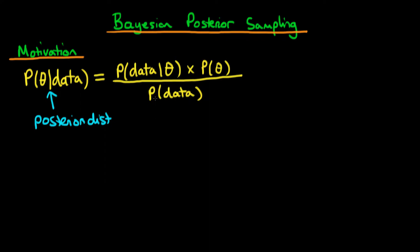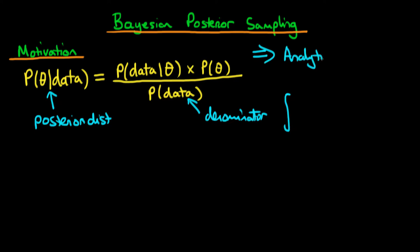We've spoken about the difficulty behind this, mainly being due to the denominator. The denominator is in general quite difficult because if you have a large number of parameters, then essentially you end up having to do some sort of difficult multidimensional integral, which in principle means that for the vast majority of cases it's not going to be possible to analytically derive the distribution given by the posterior.